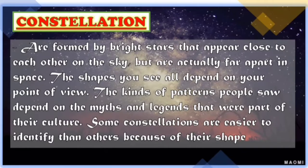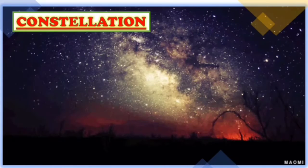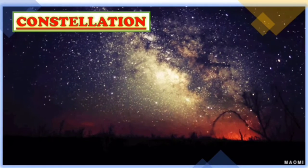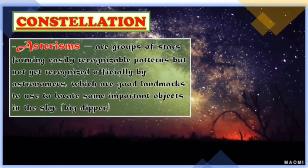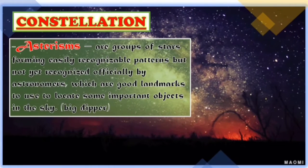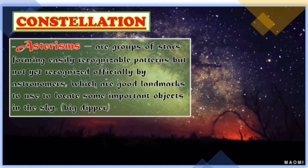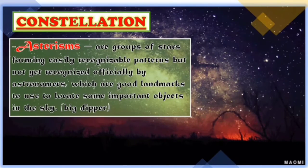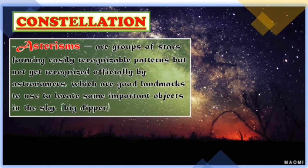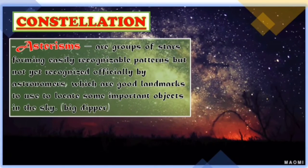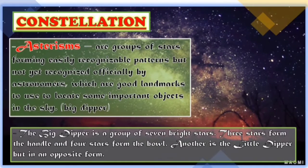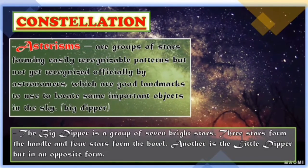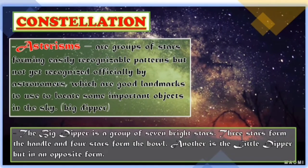In addition to constellations, there are a few asterisms which are noteworthy to consider. These are groups of stars forming easily recognizable patterns but not yet officially recognized by astronomers, which are good landmarks to use to locate some important objects in the sky. The best example of these asterisms is the Big Dipper — a group of seven bright stars, where three stars form the handle and four stars form the bowl. Another is the Little Dipper, but in an opposite form.